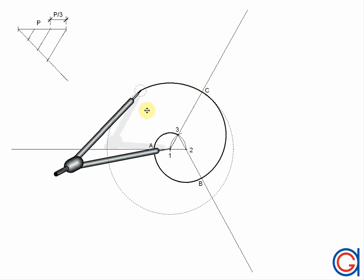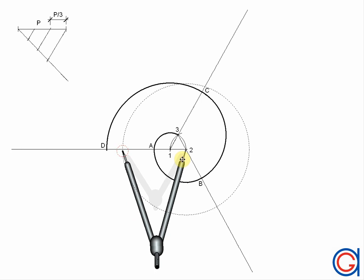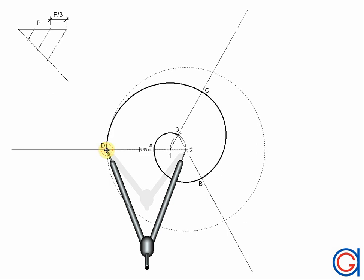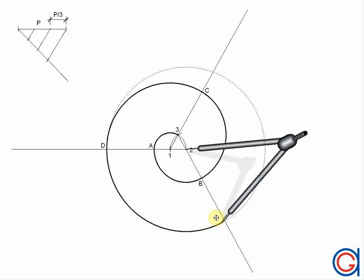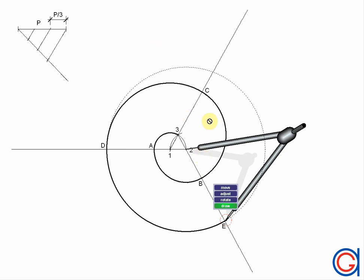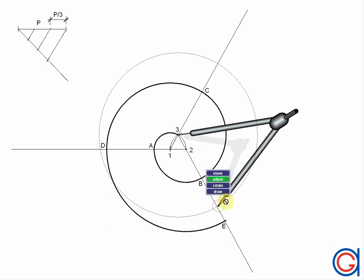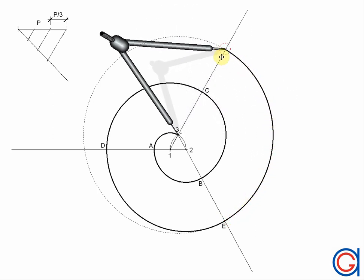To continue the spiral, with our compass centered on point one and length one–C, we scribe an arc to the left until it cuts the adjacent prolongation at point D. With our compass set on point two and length two–D, we scribe an arc down until it cuts the prolongation at point E. Then with our compass set on point three and length three–E, we scribe another arc until it cuts the prolongation at point F.